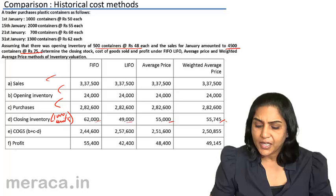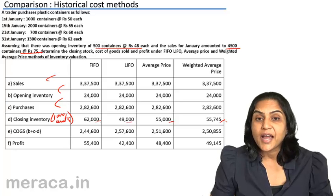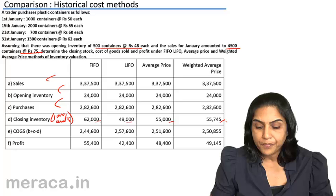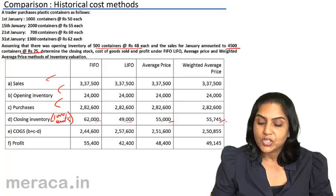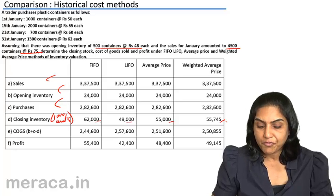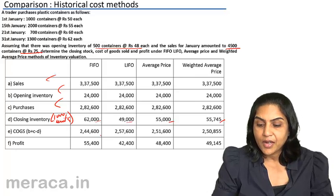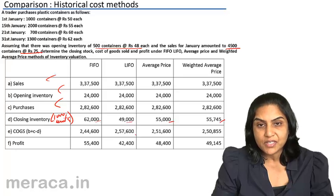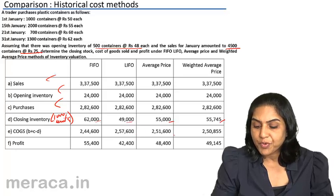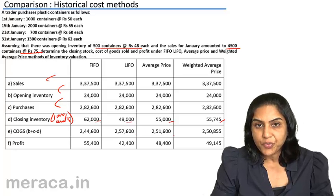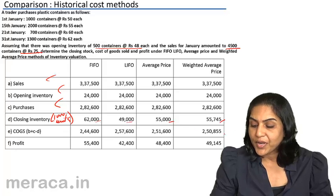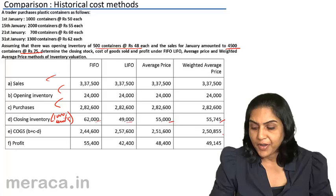In this particular example, the highest value of inventory is under FIFO and the lowest cost of goods sold is under FIFO. Cost of goods sold under FIFO is 254600, under LIFO 257600, under average price 251600, and under the weighted average price 258255.